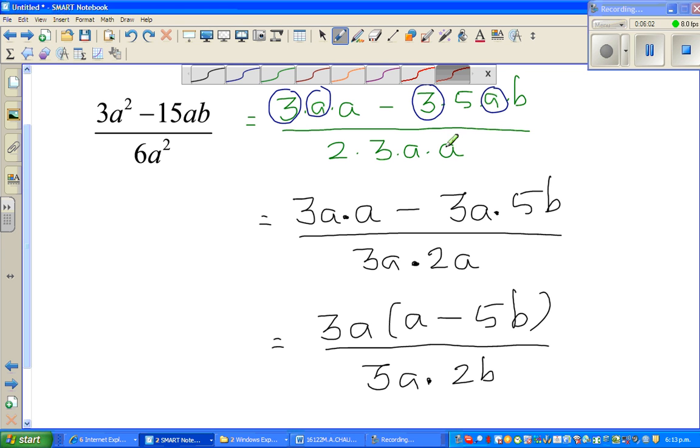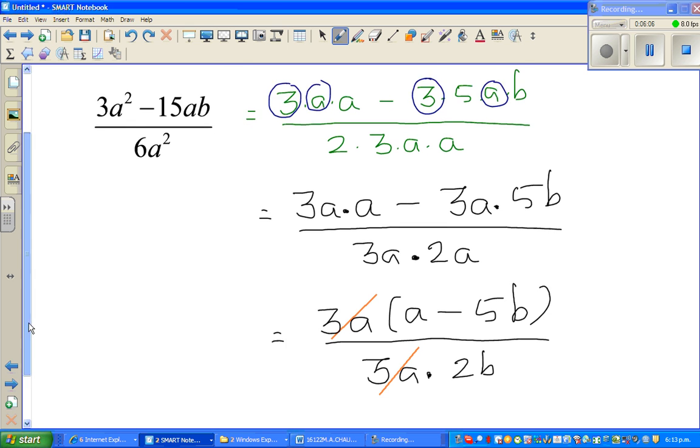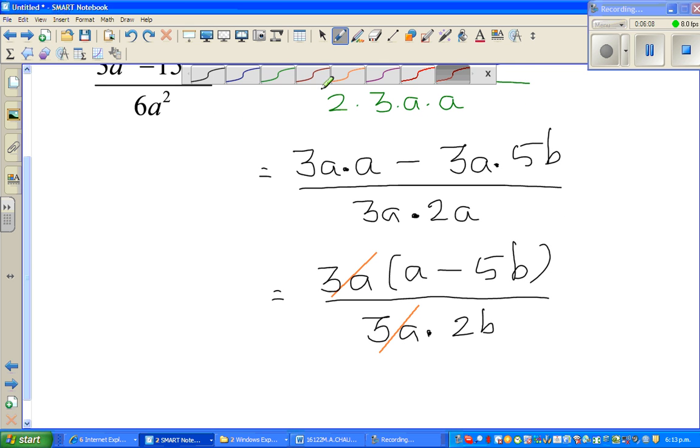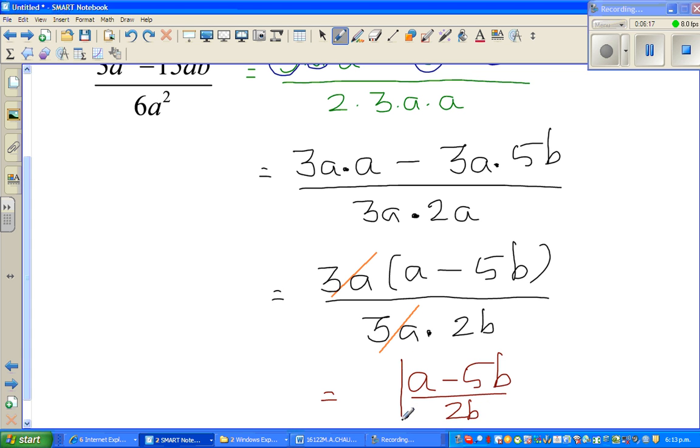If you cancel like this, what will remain is your answer, which is whatever is remaining: a minus 5b over 2a is the final answer.